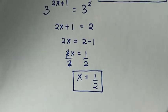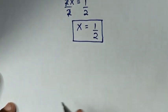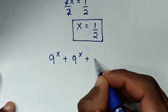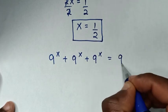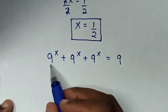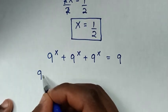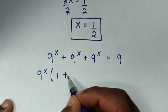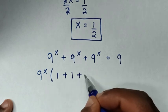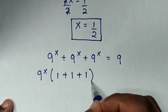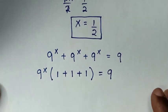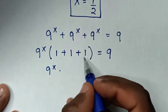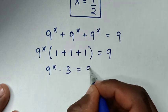Or, to solve using another method: from our problem, 9 power x plus 9 power x plus 9 power x equals 9. Here 9 power x is common, so we take 9 power x out of the bracket. Each term divided by 9 power x gives 1, so we get 9 power x times (1 plus 1 plus 1), which is 3, equal to 9.